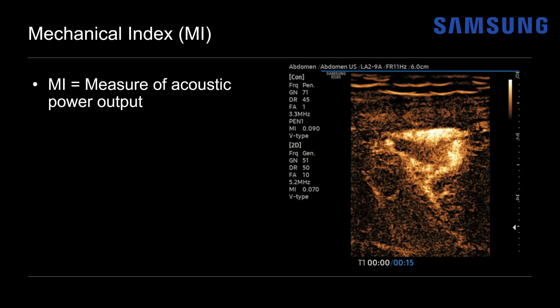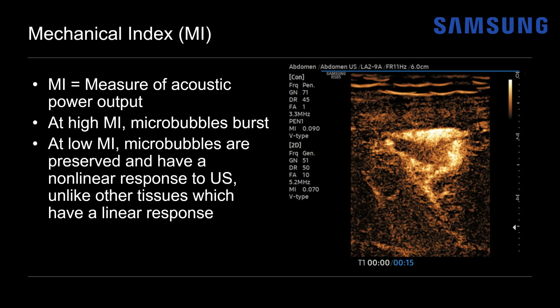The mechanical index is a measure of acoustic power output. At a high MI, because of this high acoustic power, the microbubbles are so delicate they'll actually burst. At a low MI, the microbubbles are preserved and will have a nonlinear response to the ultrasound beam — different from surrounding tissues, which have a more linear response. This allows us to create this vascular-only image.